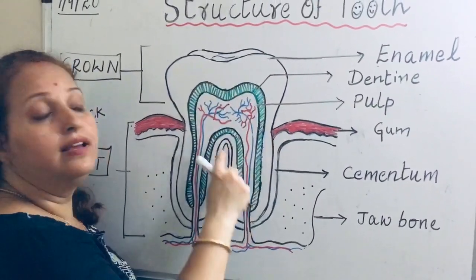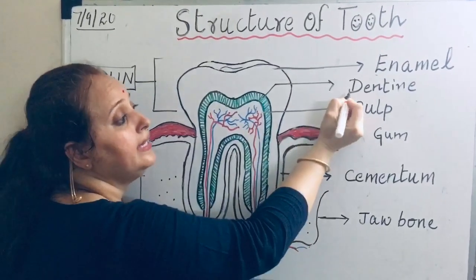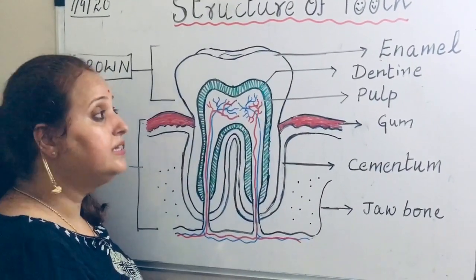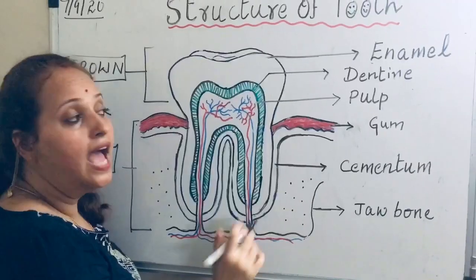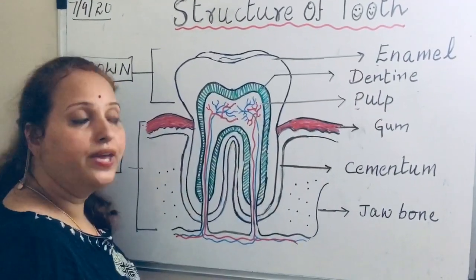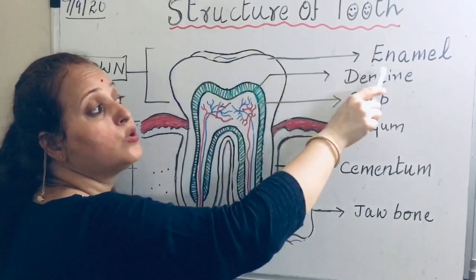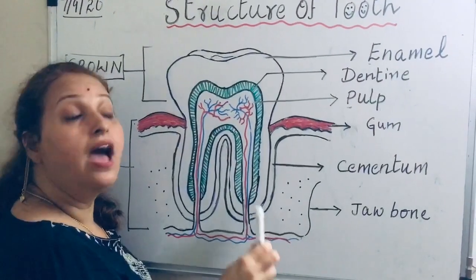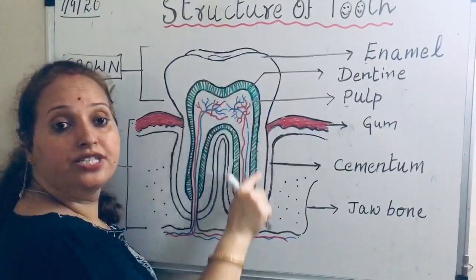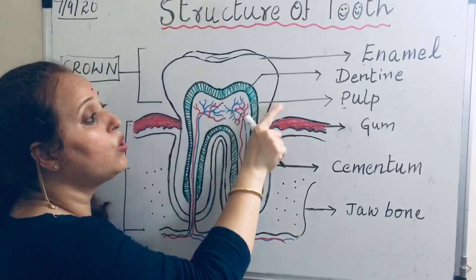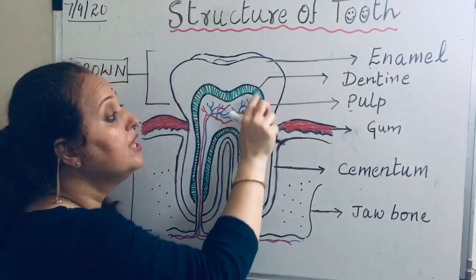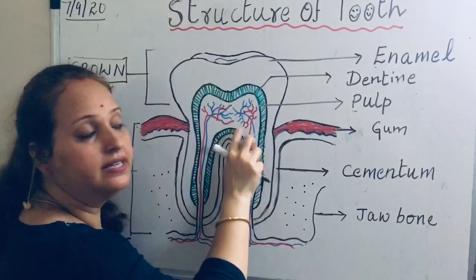Next to enamel there is another part called dentine. It is also hard, but not as hard as enamel. Dentine is the largest part of the tooth and its main function is to protect the internal part, which is the pulp. Dentine is actually yellowish in color, though it may be shown differently in diagrams for clarity.